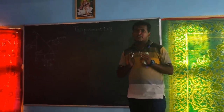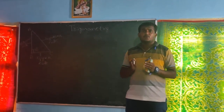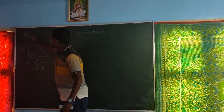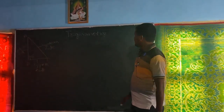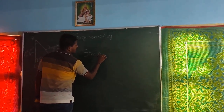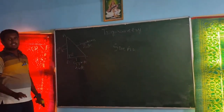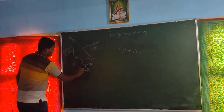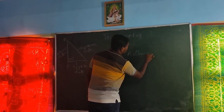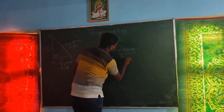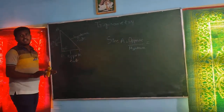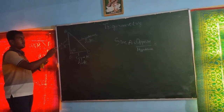I will define the six important trigonometric ratios now. Before defining any trigonometric ratio, we have to fix a particular angle. I have fixed it as angle A. The first important trigonometric ratio is sine at angle A, which is always equal to opposite side by hypotenuse side — that is, opposite by hypotenuse. For any right angle triangle, the value of sine A is equal to opposite by hypotenuse.